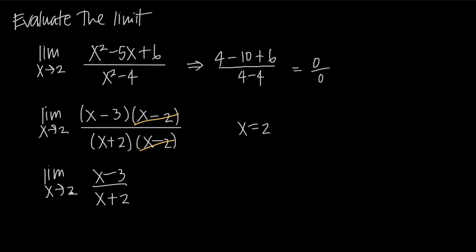Now that we've canceled the factor, what we want to do is use substitution again to see if we can find a real number value for the limit. So we'll plug in x equals 2 because we're approaching 2, x is approaching 2. So we'll plug in x equals 2 and we'll get 2 minus 3 in the numerator. We'll get 2 plus 2 in the denominator. And then when we take 2 minus 3, we get a negative 1.